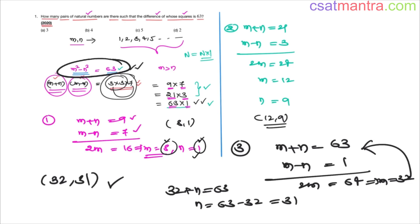So this equation has three solutions: 8 comma 1, 12 comma 9, 32 comma 31. Three pairs of numbers which satisfy this equation and they are natural numbers. So our answer is A.